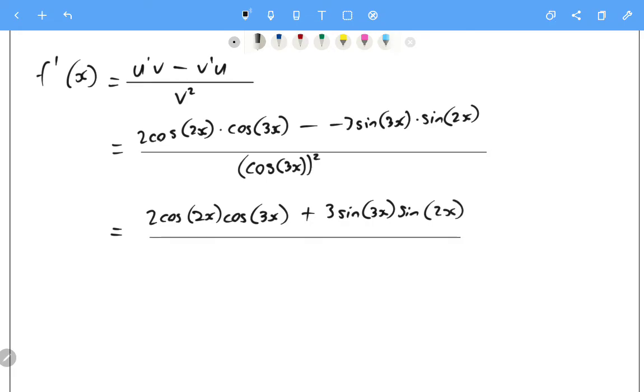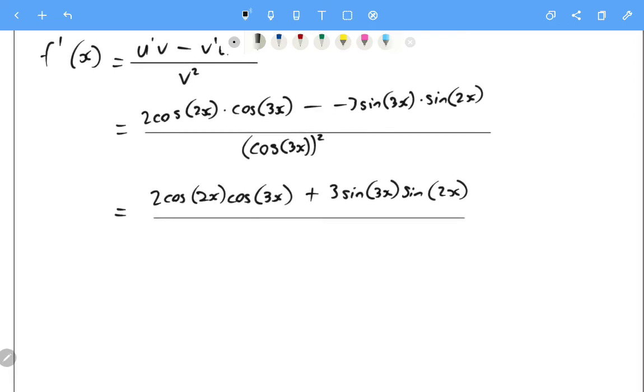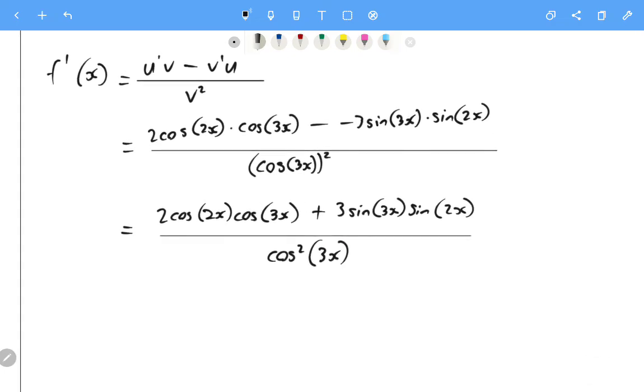There are some rules that do allow us to combine these things but we are not going to be looking at those today. And the cos 3x squared is better written as cos squared of 3x. And there we go and there's our final answer.